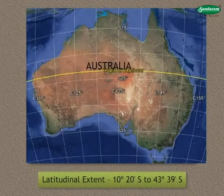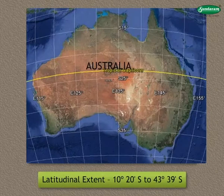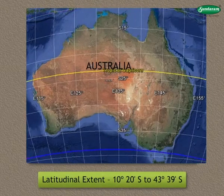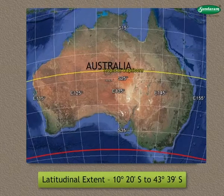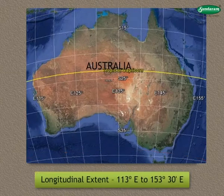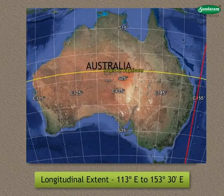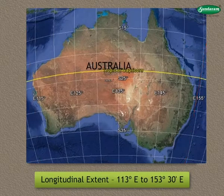The latitudinal extent of this continent is from 10 degrees 20 latitude south to 40 degrees 39 latitude south. Its longitudinal extent is 113 degrees east to 153 degrees 30 east.